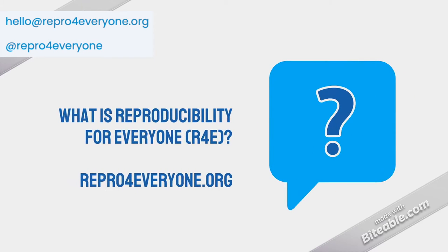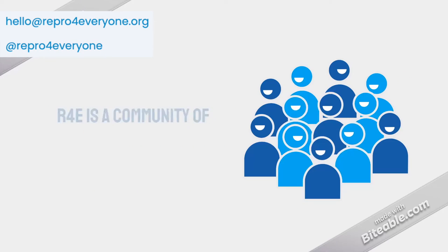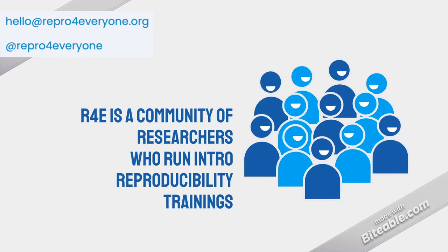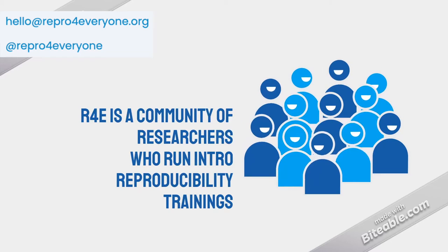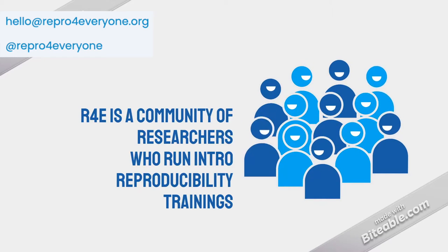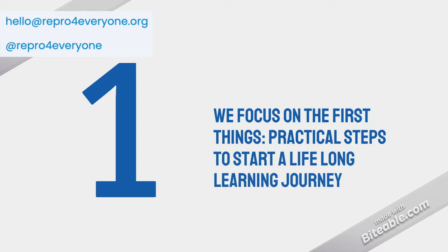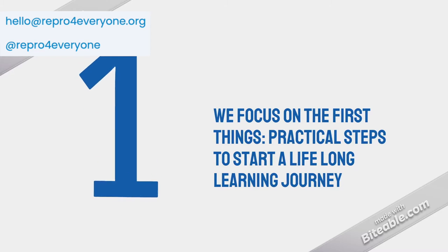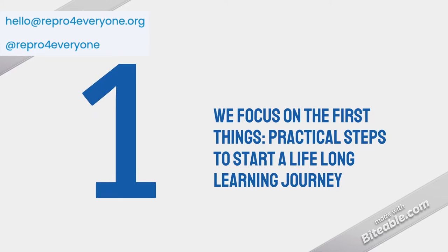Reproducibility for Everyone is a community of mostly researchers, also some librarians and other people who are allies to research. There's a community of people that have decided to run introductory reproducibility trainings. We focus on the first touch of reproducibility — the things you can learn when you don't know anything at all about the topic that are very practical, and can get people started onto a lifelong learning path about reproducibility in their research.